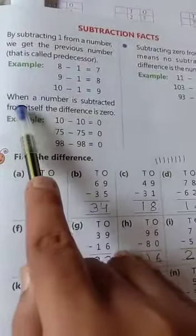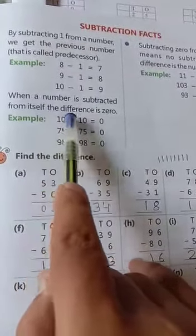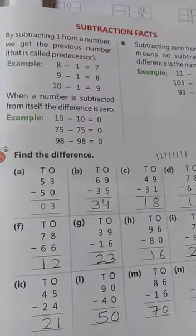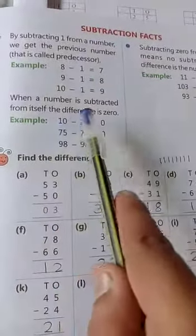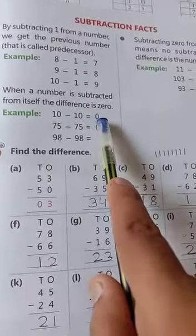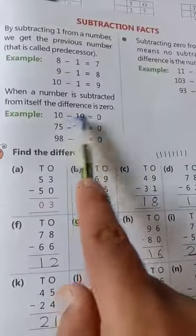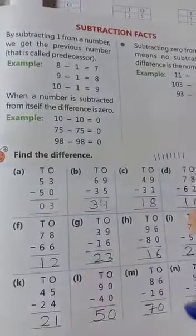Our second fact is: when a number is subtracted from itself, the difference is 0. When we subtract a number from the same number, we get 0 in the answer. That means both sides we have same number and we apply subtraction, so our answer will be 0.